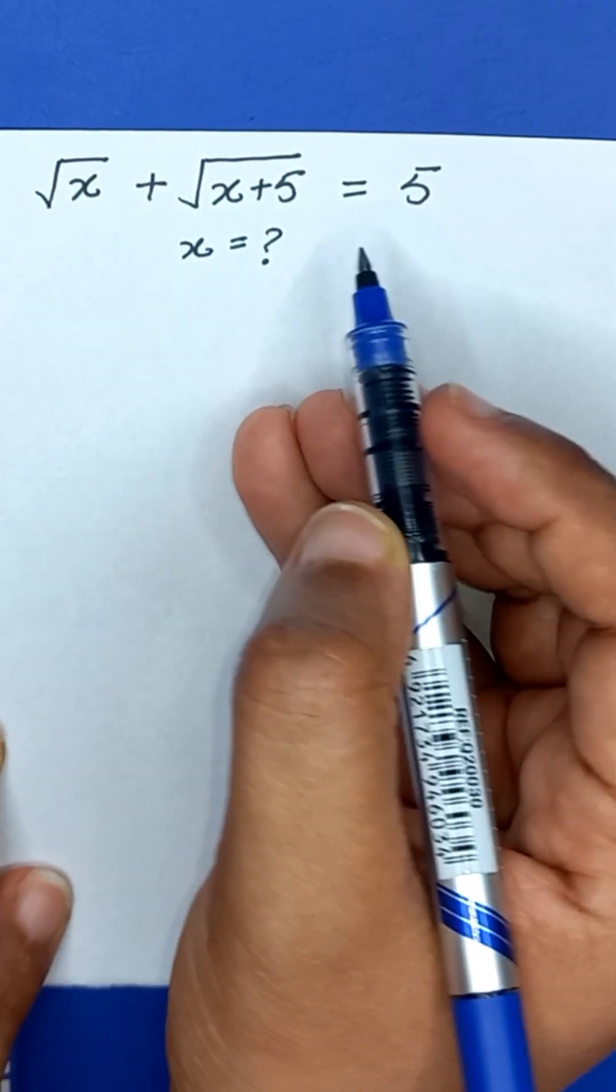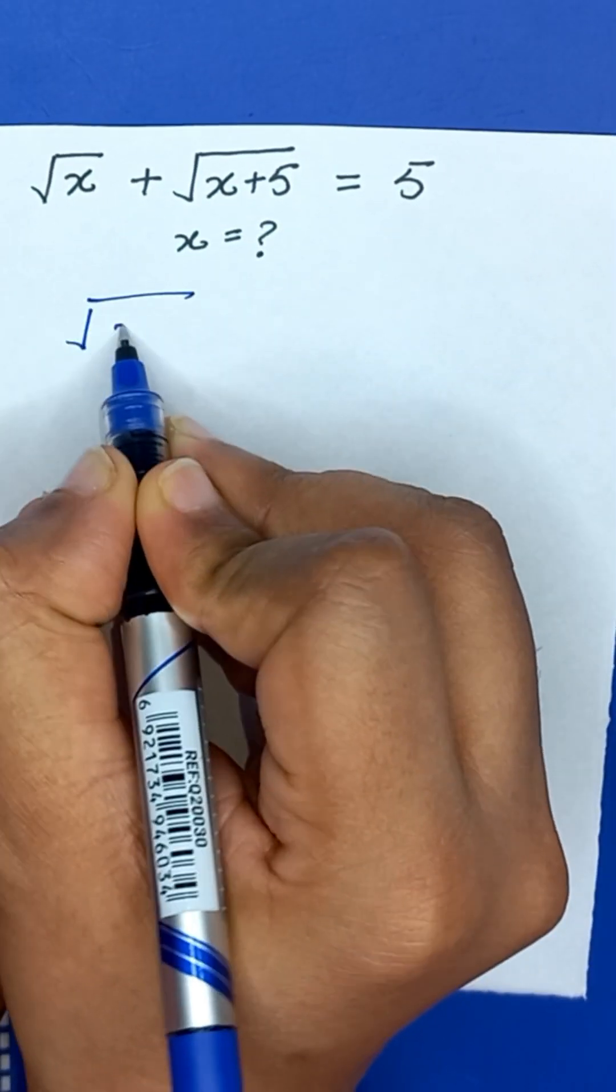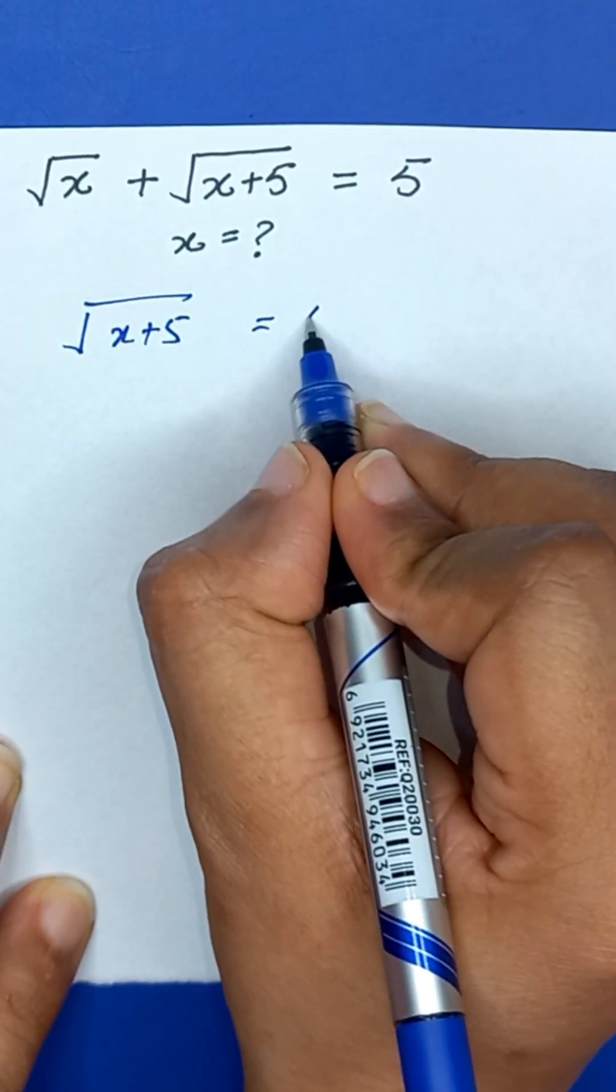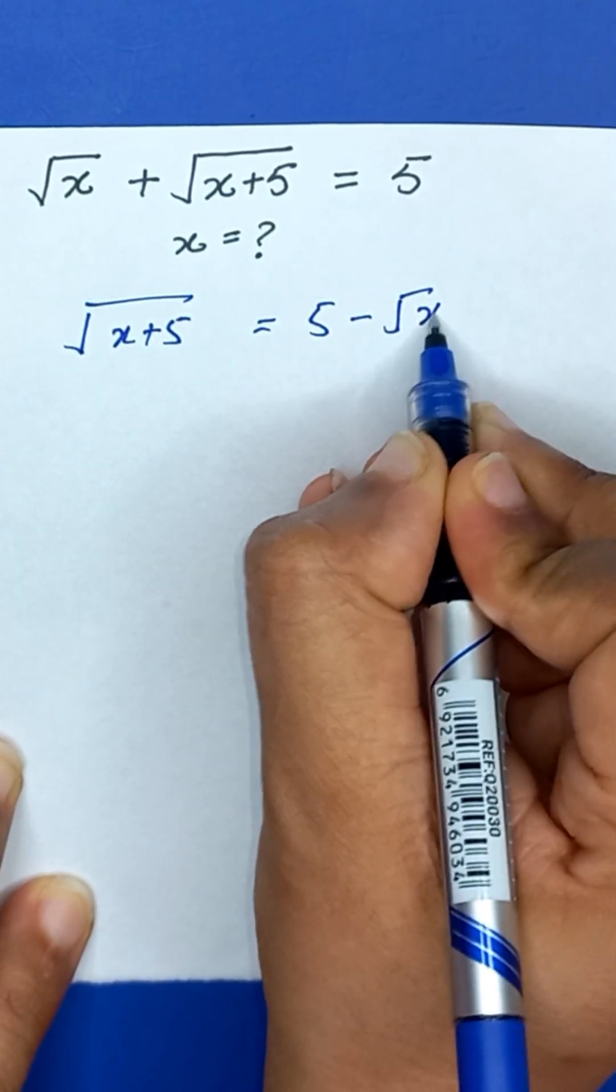We will solve a nice radical equation. In the first step, square root of x plus 5, and now I will take the square root of x to the right hand side, so it will be 5 minus square root of x.